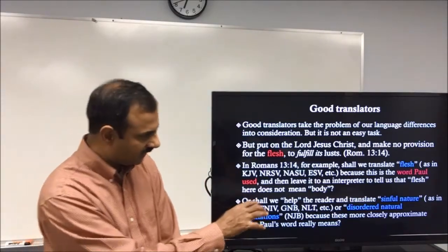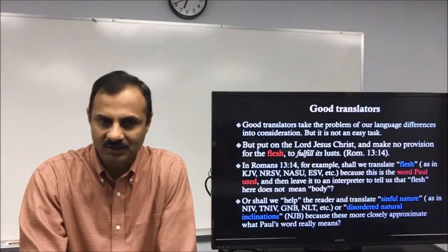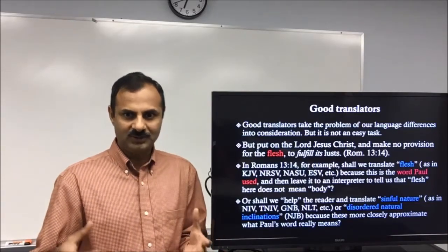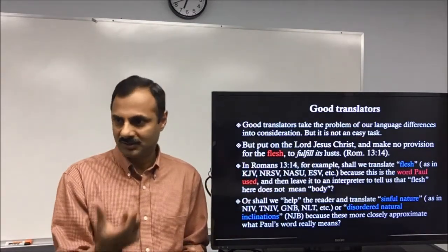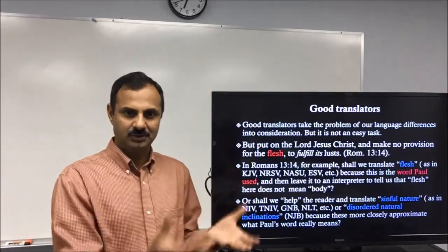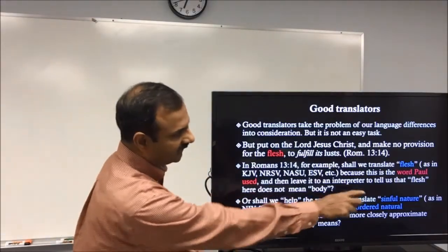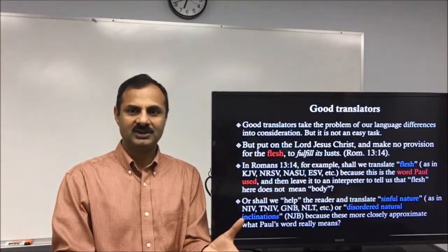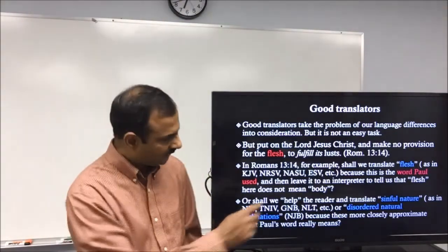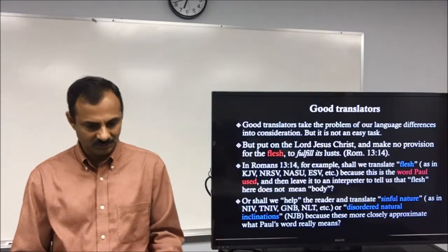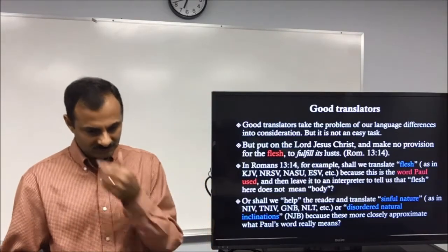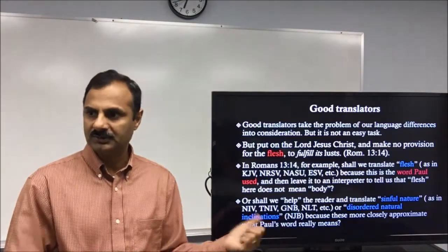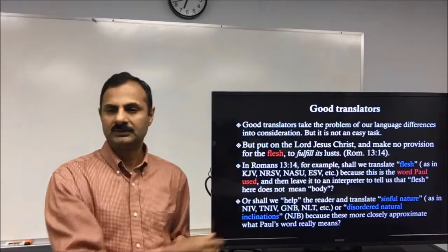In context, Paul used 'flesh' to mean sinful nature, not the physical body. As a translator, shall we leave the word 'flesh' because Paul used it, or shall we help the reader and translate it as 'sinful nature'? Now there are two different versions coming from the same text. Translations like NIV and TNIV used 'disordered natural inclinations' or 'sinful nature' because these more closely approximate what Paul's words really mean.